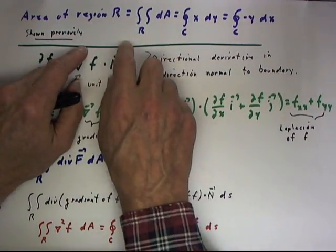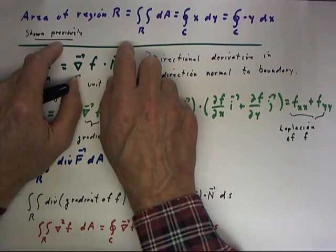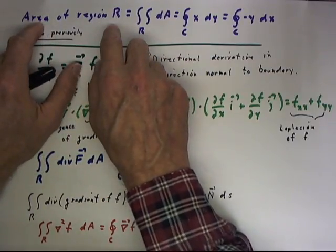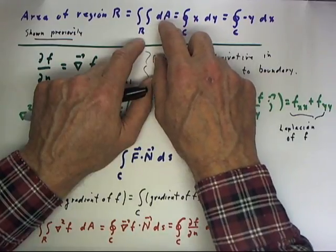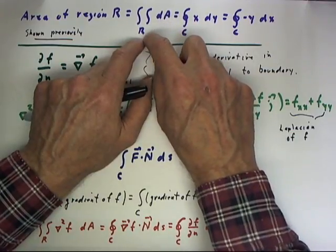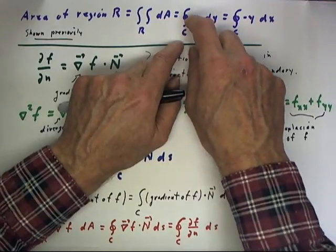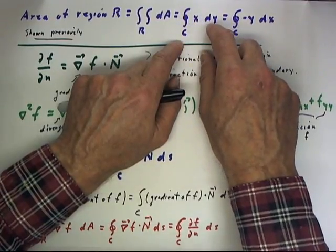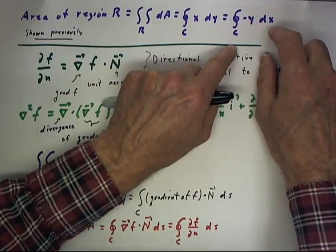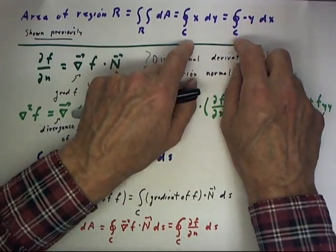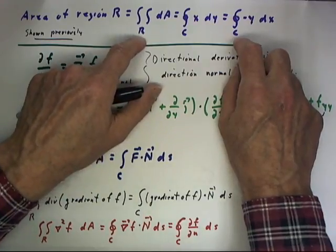Another neat application of Green's Theorem is that the area of a region — the integral of dA over a region — is equal to the integral over the closed curve of either x dy or negative y dx, where c is the closed curve that encloses the boundary of the region.